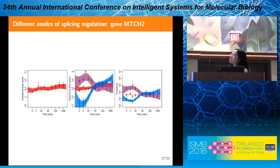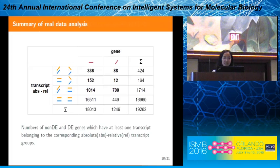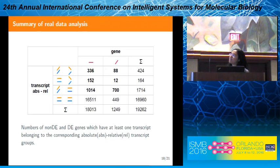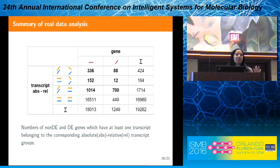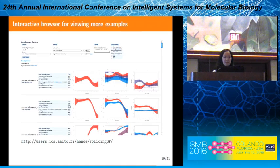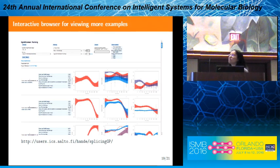There is also another example that behaves similarly in both absolute and relative settings. We summarized our findings in a table showing the number of non-differentially expressed and differentially expressed genes that have at least one transcript belonging to differentially expressed categories for absolute and relative levels. Almost 11% of genes showed different temporal activities at different levels. You can see more examples in an interactive browser where it is possible to rank genes by Bayes factors or fold change values.